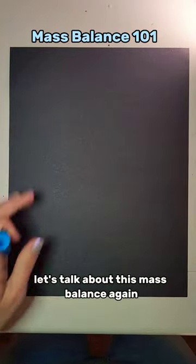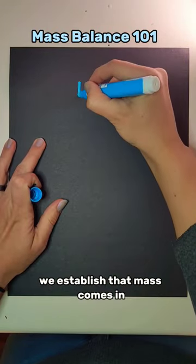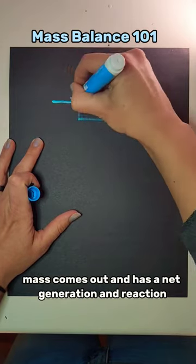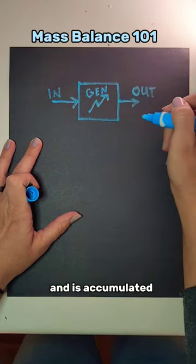Let's talk about mass balance again. Starting with a system represented as a box, we establish that mass comes in, mass comes out, and has a net generation and reaction, and is accumulated.